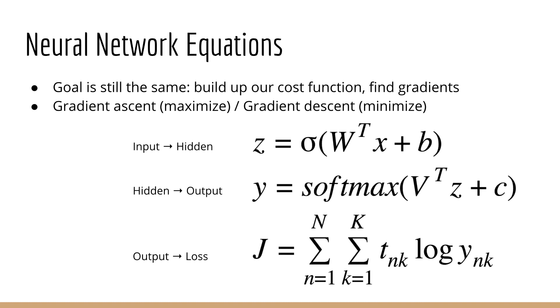Next, we can write down all the relevant equations for our neural network. And remember, our strategy is still the same as before. We want to build up our objective function, which is the log likelihood or the negative log likelihood. Then, we want to find the gradient with respect to each parameter, so that we can perform gradient ascent or gradient descent. Gradient ascent to maximize, and gradient descent to minimize.